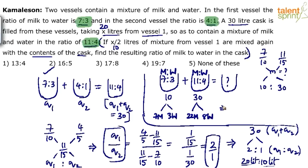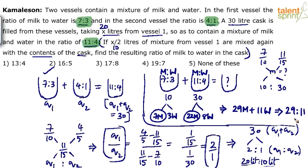In the final mixture we have 7 + 22 = 29 liters of milk and 3 + 8 = 11 liters of water. Total quantity is 10 + 30 = 40 liters. The resulting ratio of milk to water is 29:11, which is the final answer.